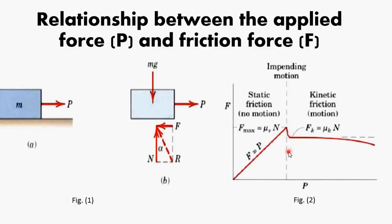This is a very important diagram. If we understand this diagram, then we understand friction. This diagram is divided into three parts: static friction (no motion), kinetic friction (motion), and impending motion, which is located between them. In the static region, we have a linear relationship between the frictional force and the applied force, and here we can apply the equations of equilibrium. At this point, the frictional force reaches its maximum value.